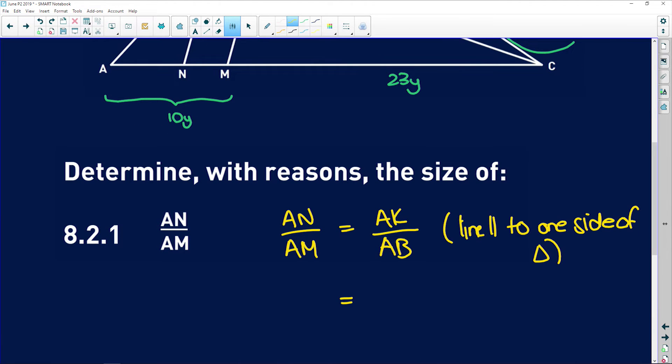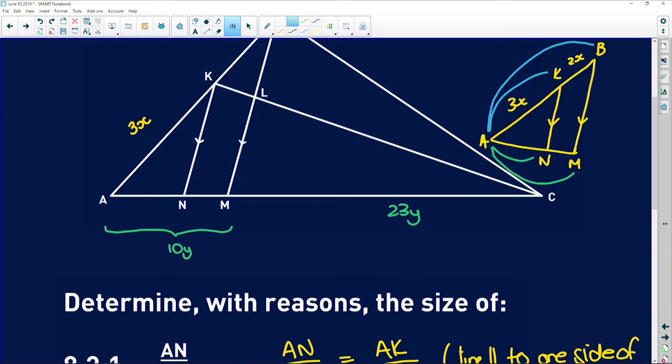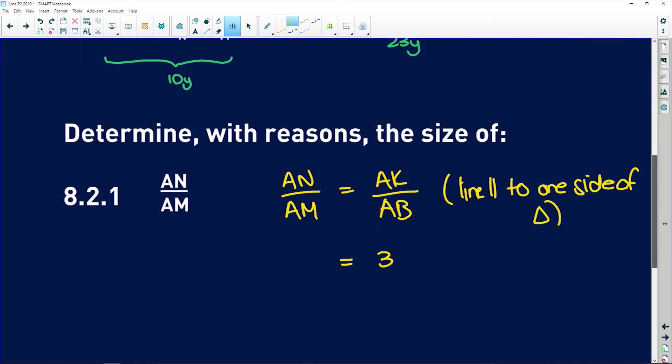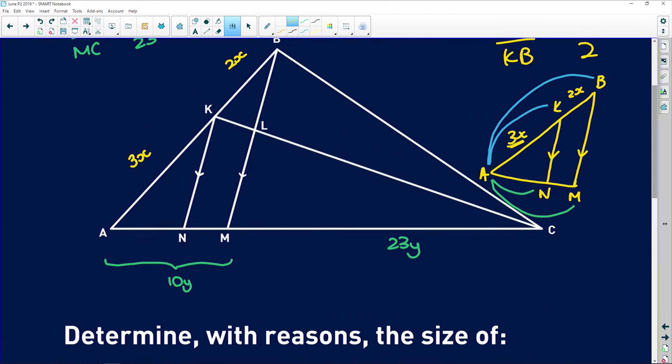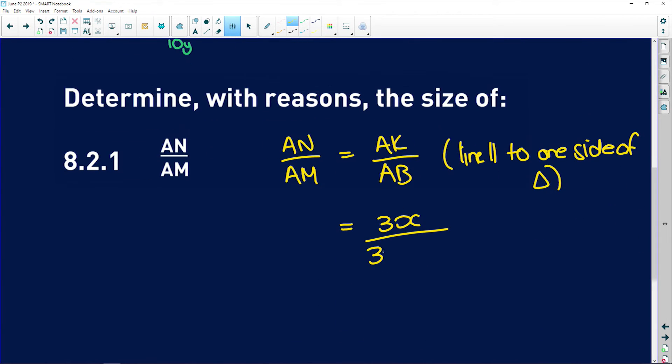And AK, remember, we said was, if you draw this on your diagram and you say 3X, then you can refer to it as 3X. So we have 3X over AB, which is this whole side over here. So that is equal to 3X plus 2X, which is equal to 3X over 5X. The X's will divide into each other and we get 3 over 5.